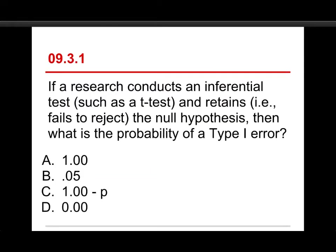The first question in the quiz is, if a researcher conducts an inferential test, such as a t-test, and retains, that is, fails to reject the null hypothesis, then what is the probability of a Type 1 error? The choices are 1.00, or 0.05, or 1.00 minus p, or 0.00.